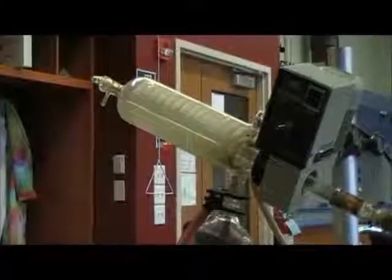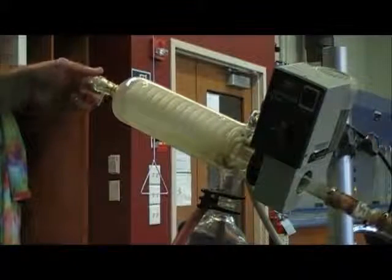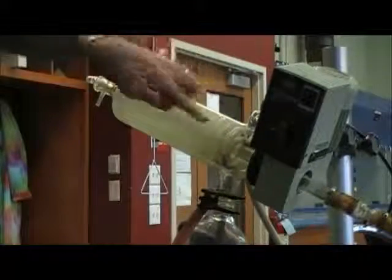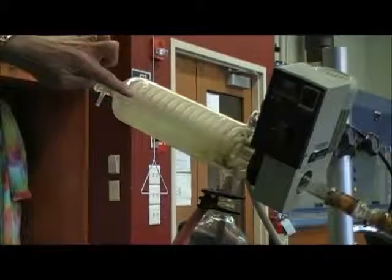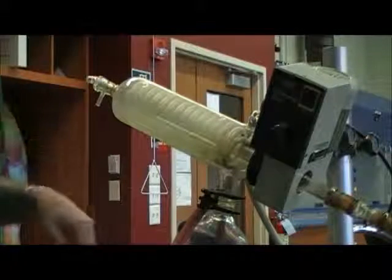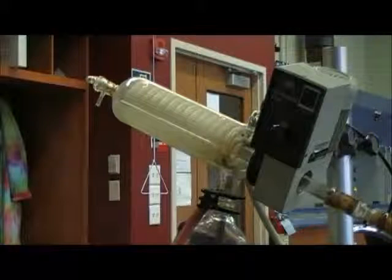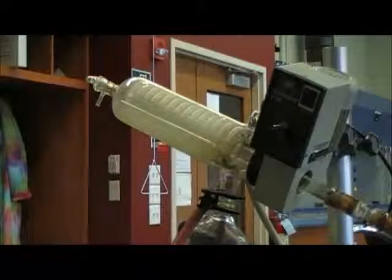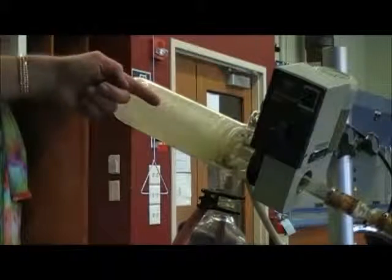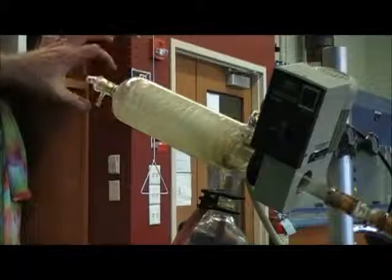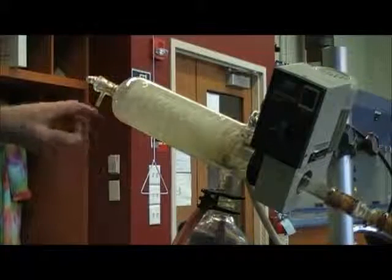This part up here consists of a condenser which is inside. I don't know if you can see it, but there's a spiral in there, and when we turn the water on, hopefully you can see that there's water going through this condenser that's inside of this big glass tube.